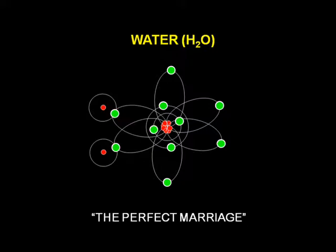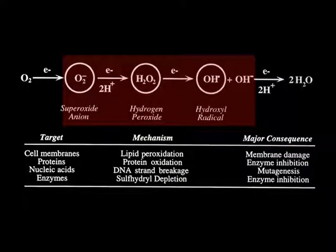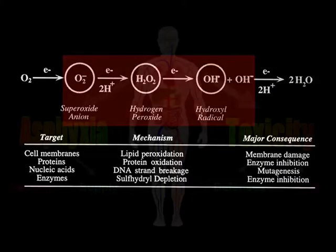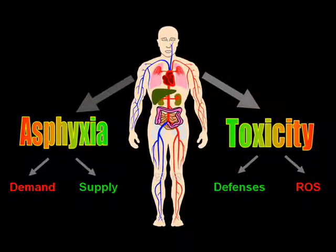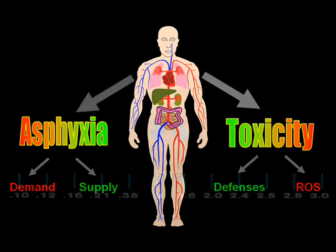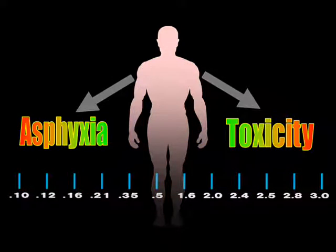Water is the perfect marriage of oxygen and hydrogen, but the intermediate forms can interact with various parts of the body. As they do, they can break things down, disrupt the production of chemicals within the body, and even damage DNA — so oxygen can be potentially toxic. We essentially have a balance of supply and demand on one hand, and oxygen defenses versus reactive oxygen species on the other. The range of oxygen we might be exposed to for a reasonable period spans from 0.1 atmospheres all the way through to three atmospheres.